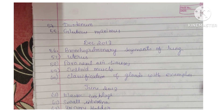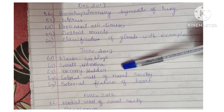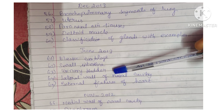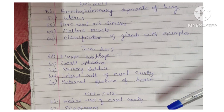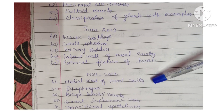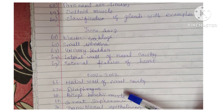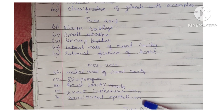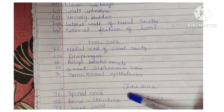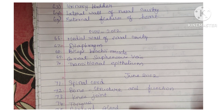Continuing anatomy: deltoid muscle, classification of glands with examples, elastic cartilage, small intestine, urinary bladder, lateral wall of nasal cavity, external features of heart, median wall of nasal cavity, diaphragm, biceps, brachial muscle, great saphenous vein, transitional epithelium, spinal cord, bone structure and function, knee joint, and tongue.